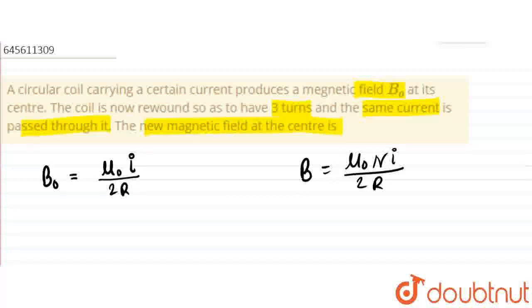So B-note is μ₀I/2R. If this coil is rewound to make three turns, then the perimeter remains the same: initial is 2πR, final is 2πr times 3. So the new radius is r = R/3.